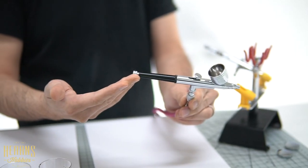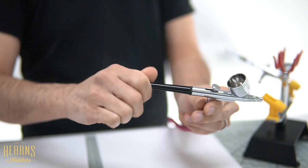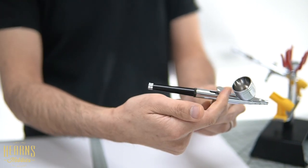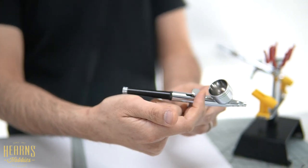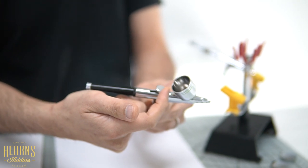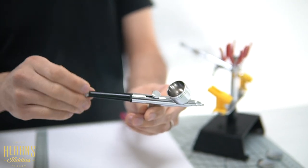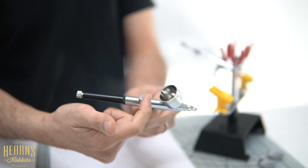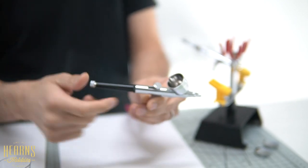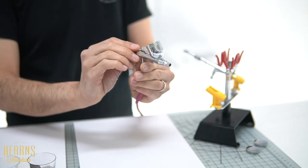At the back you've got an end stop. So if I screw that all the way, this controls how much the trigger moves. So that means you'll only be doing fine work and then as you screw it open, you'll be able to move through the full action. That's the classic there, 0.3mm.